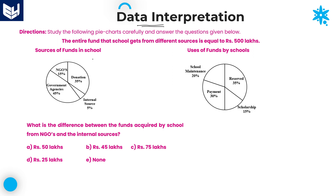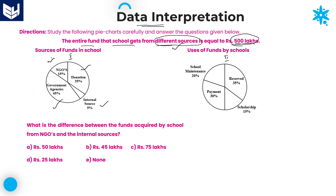Here, if you observe carefully, in this pie chart, total two pie charts are given. The entire fund that the school gets from different sources is equal to 500 lakhs. The first pie chart is completely talking about sources of funds in school — from various sources the school is getting funds. Those sources are: donation, internal source, government agencies, and NGOs.